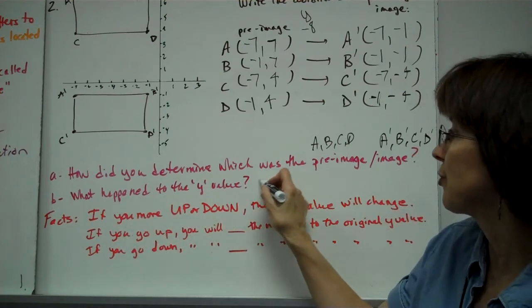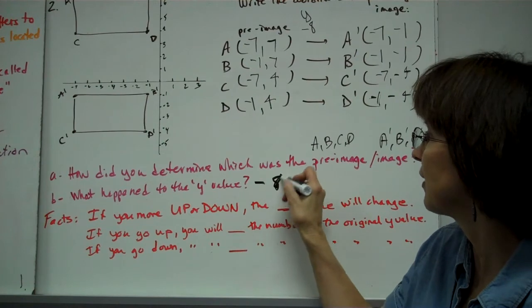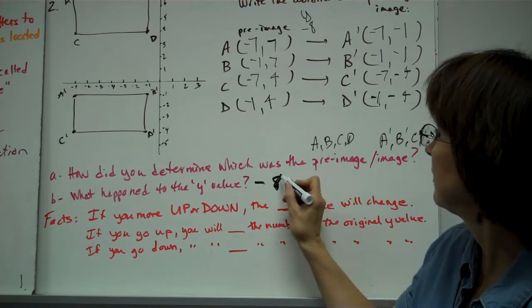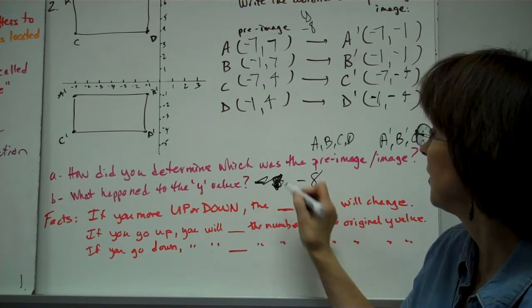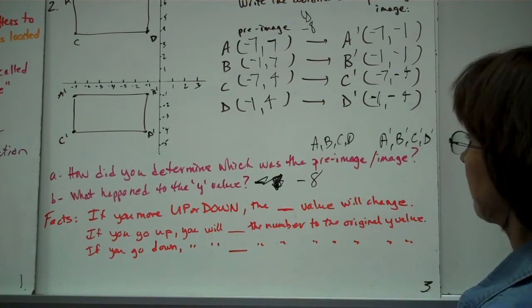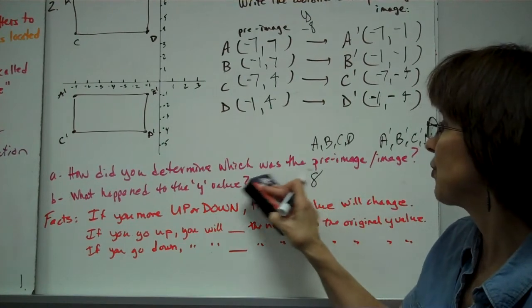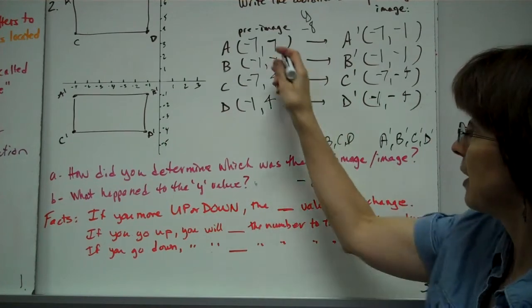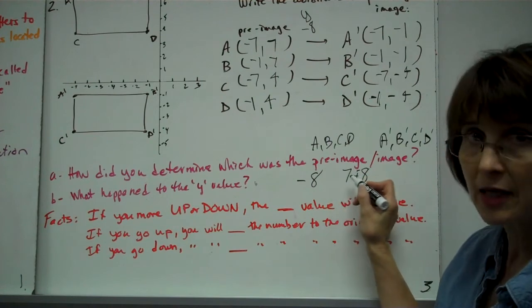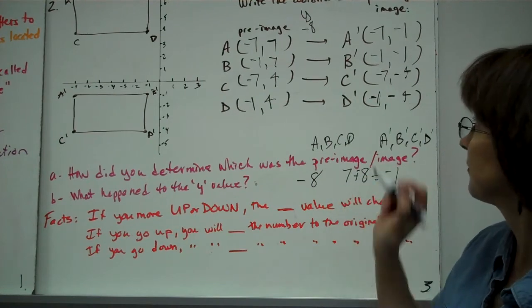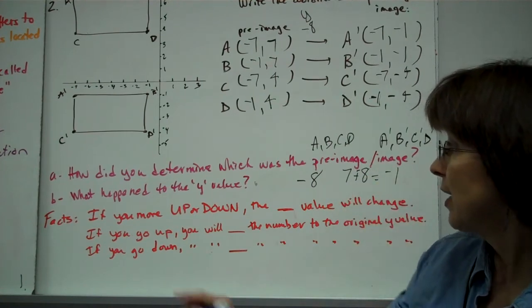What happened to the y value? You subtracted 8 from each y value. And you see that 7 minus 8, add the opposite, unlike signs subtract, it's -1. We can do that for each other.